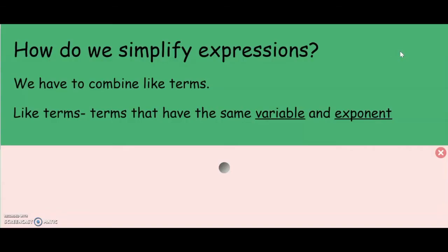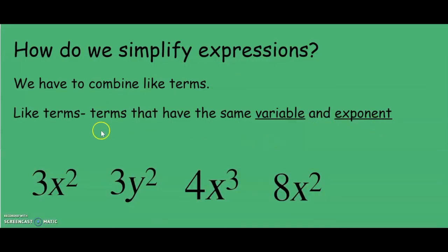To wrap up and review, we discussed how to simplify expressions by combining like terms and reminding you that like terms are terms that have the same variable and exponent. For example, looking at these terms here, we see a couple of terms that have x as the variable, and we see a couple of terms that have 2 as the exponent. You have to choose the like terms that have the same variable and exponent, which means that our like terms here would be 3x squared and 8x squared.